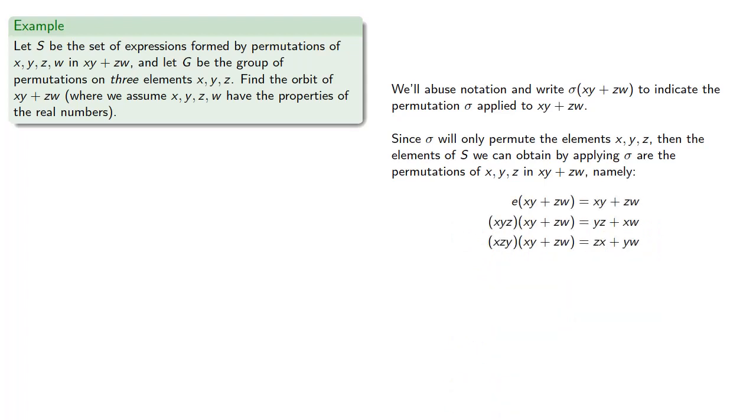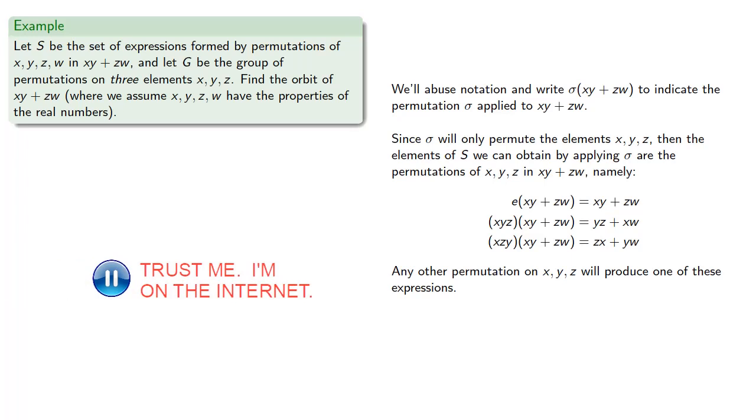And note that any other permutation on X, Y, and Z will produce one of these expressions. And so we find the orbit of X, Y plus Z, W to consist of the three distinct elements.